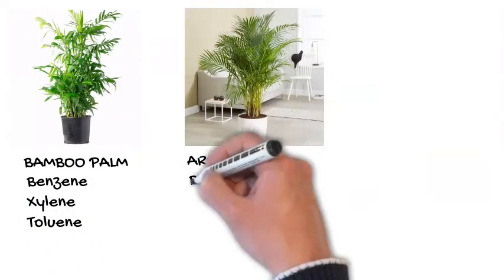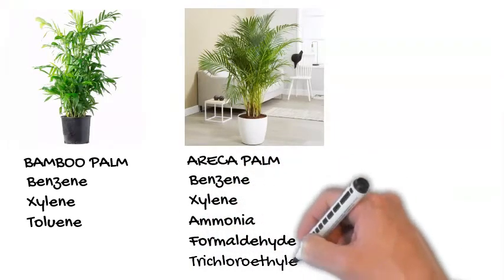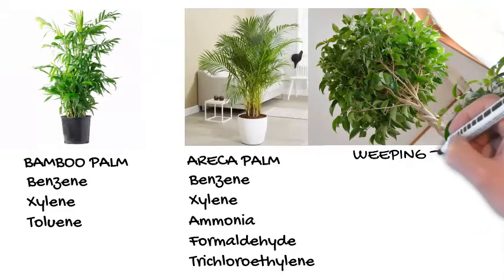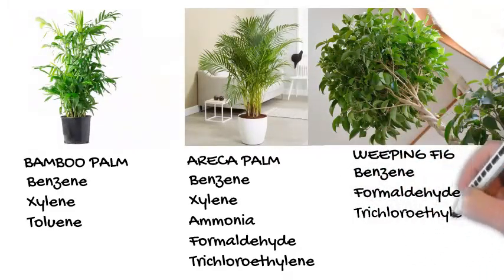Areca palm helps to filter benzene, xylene, ammonia, formaldehyde, and trichloroethylene. Weeping fig helps to filter benzene, formaldehyde, and trichloroethylene.